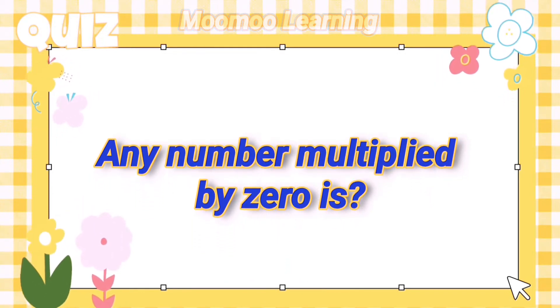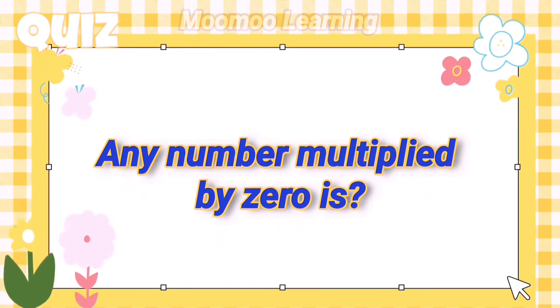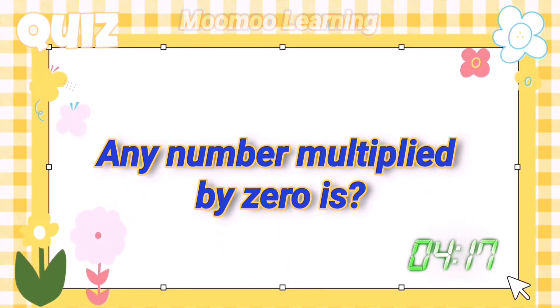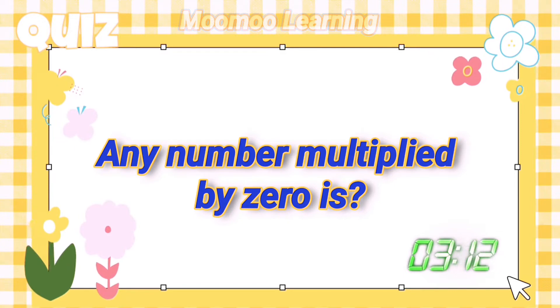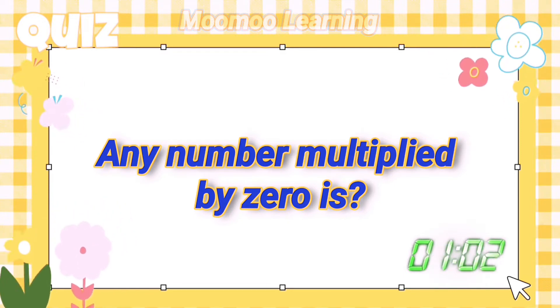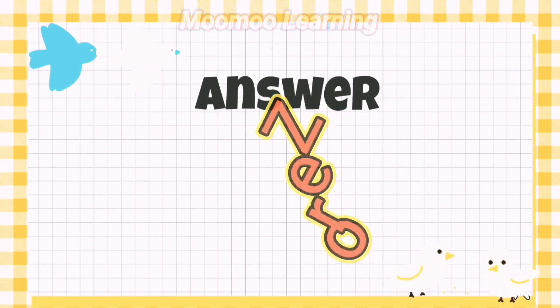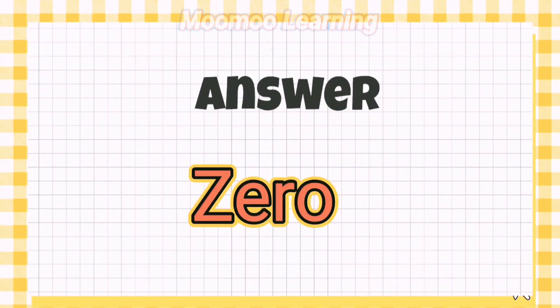Any number multiplied by zero is? Answer: Zero.